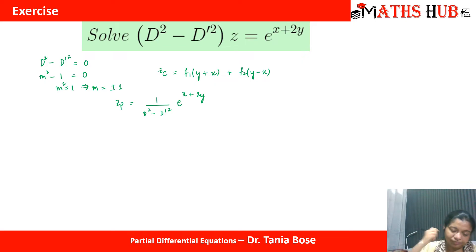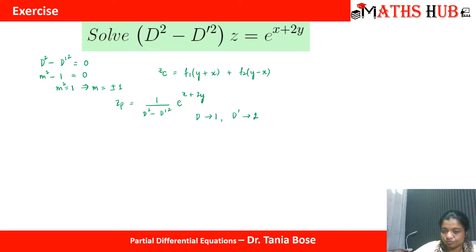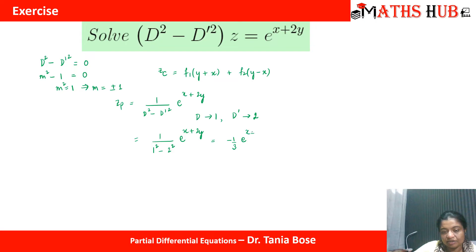The particular solution is 1/(D² − D'²) · e^(x+2y). According to the rule, we replace D by 1 and D' by 2. When we replace D by 1 and D' by 2, the denominator becomes 1² − 2² = 1 − 4 = −3. So we get −(1/3) e^(x+2y).